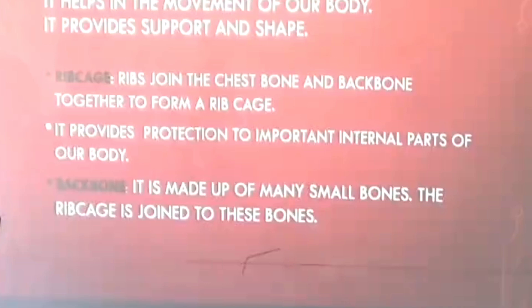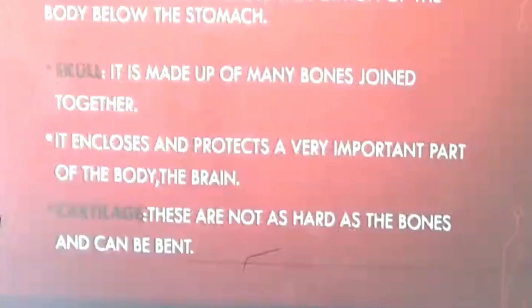The next important part of the skeleton is the backbone. It is made up of many small bones. The rib cage is joined to these bones, and they run vertically. We also have shoulder bones. We have pelvic bones, which enclose the portion of the body below the stomach.